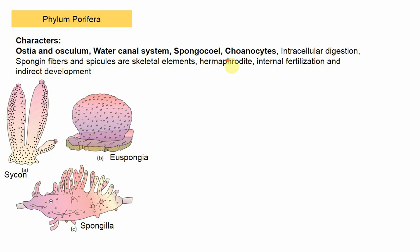Porifera are mainly hermaphrodite — both male and female reproductive structures are present in the same organism. Fertilization is internal and development is indirect, meaning there are larval stages. Examples include Sycon (also called Scypha), Euspongia (the bath sponge), and Spongilla. Remember, Spongilla is the only freshwater member; all remaining are marine.